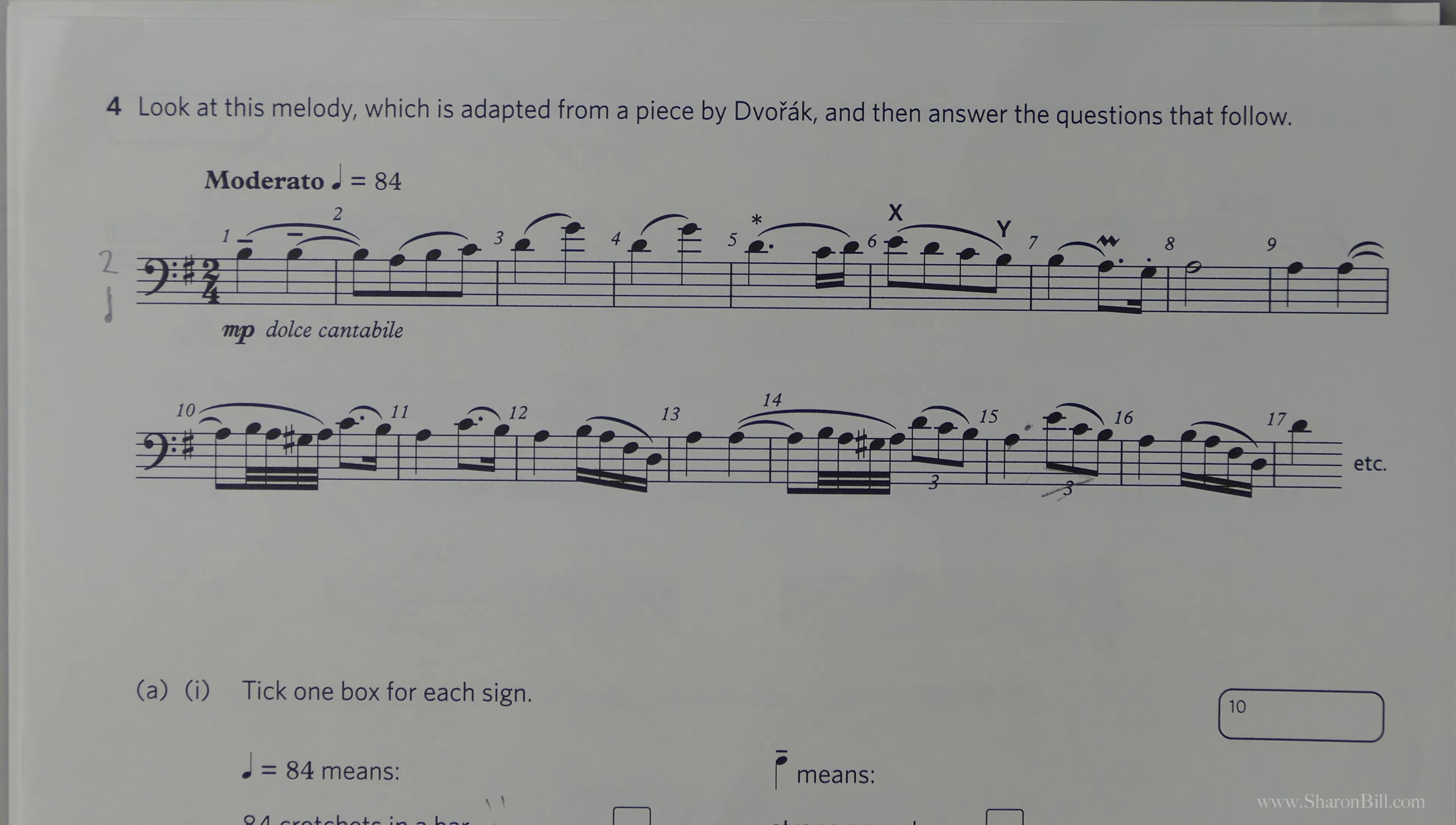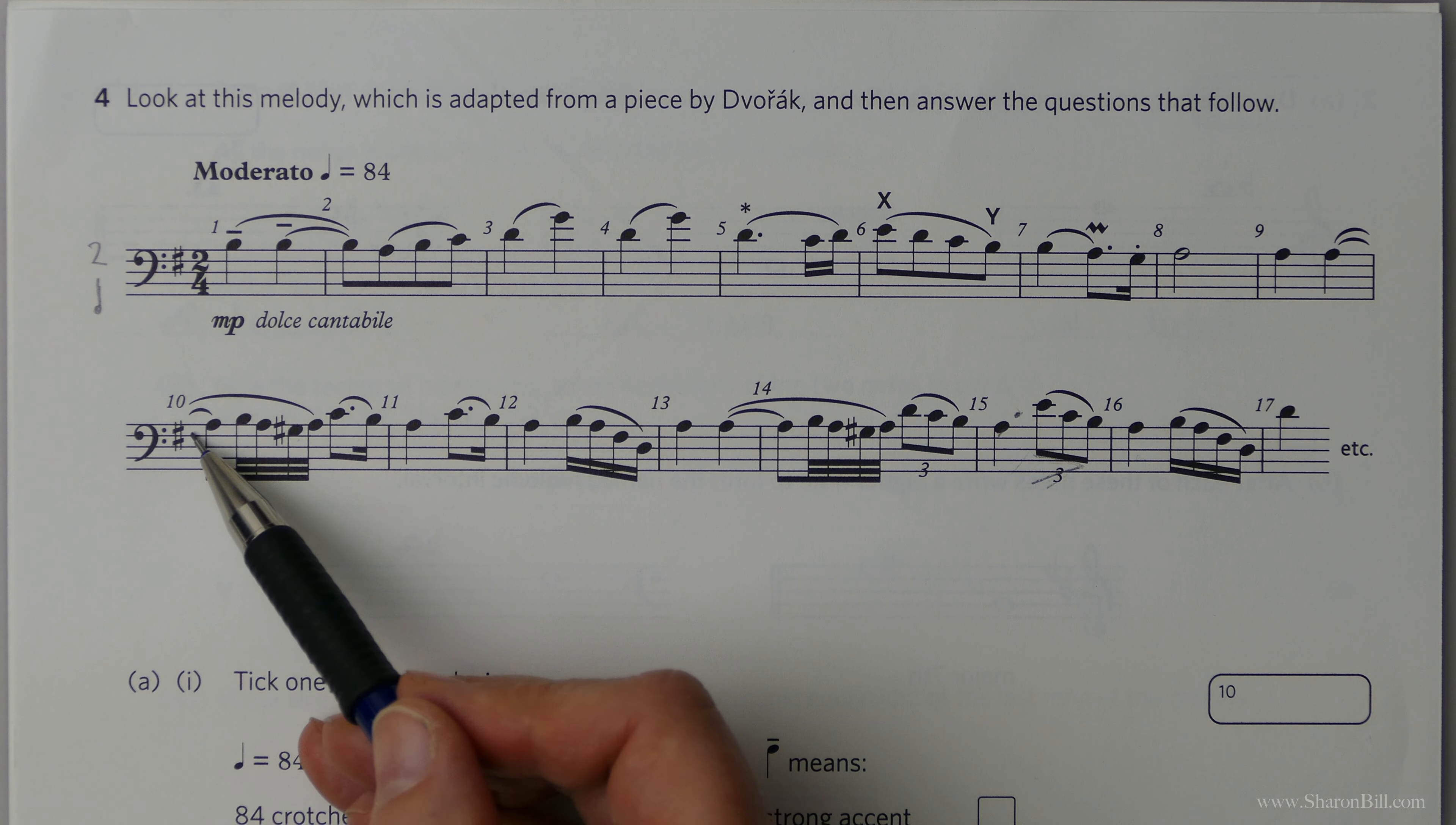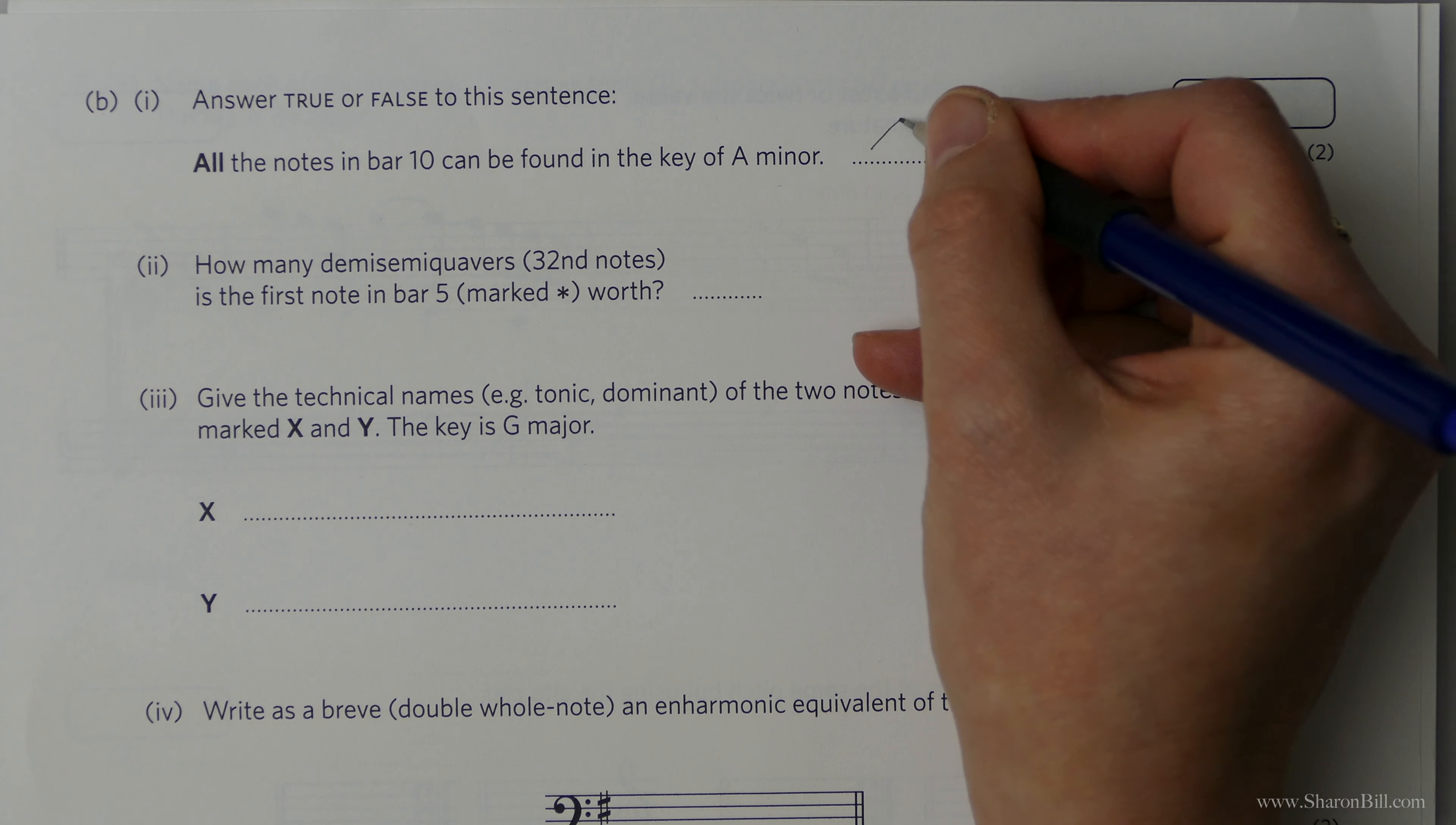And so there's an F sharp in the key signature. Which bar are we after? Actually, let me just check. Bar 10, yes, that's right. The key signature, F sharp, could be explained as the raised sixth. There's the raised seventh. Although actually, there are no Fs in this bar to be sharpened. So that isn't applying at all. And so we've just got the raised seventh here of the harmonic minor form. So it is true. We can explain that in the terms of A minor.